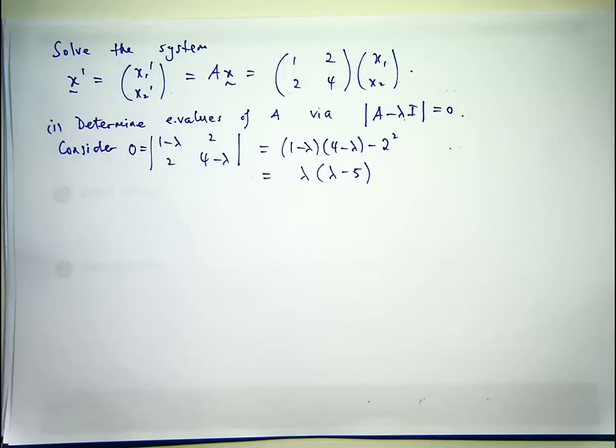You can see I've got a polynomial equation, a quadratic equation that factorizes nicely. And I can conclude that lambda equals zero or lambda equals positive five.